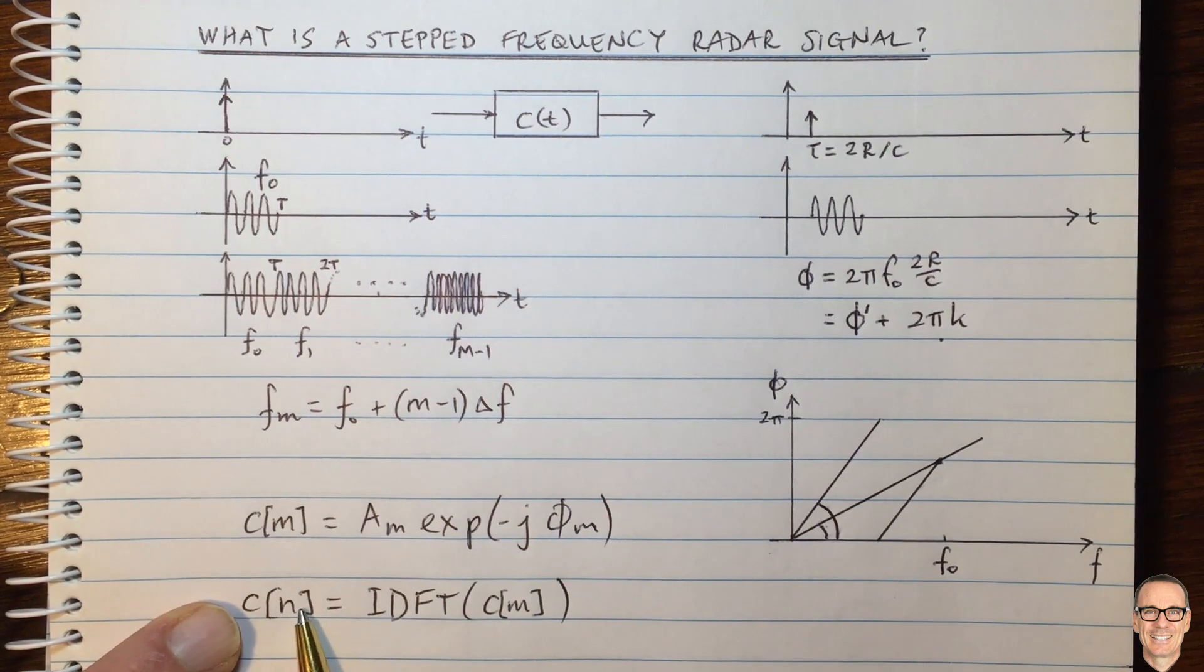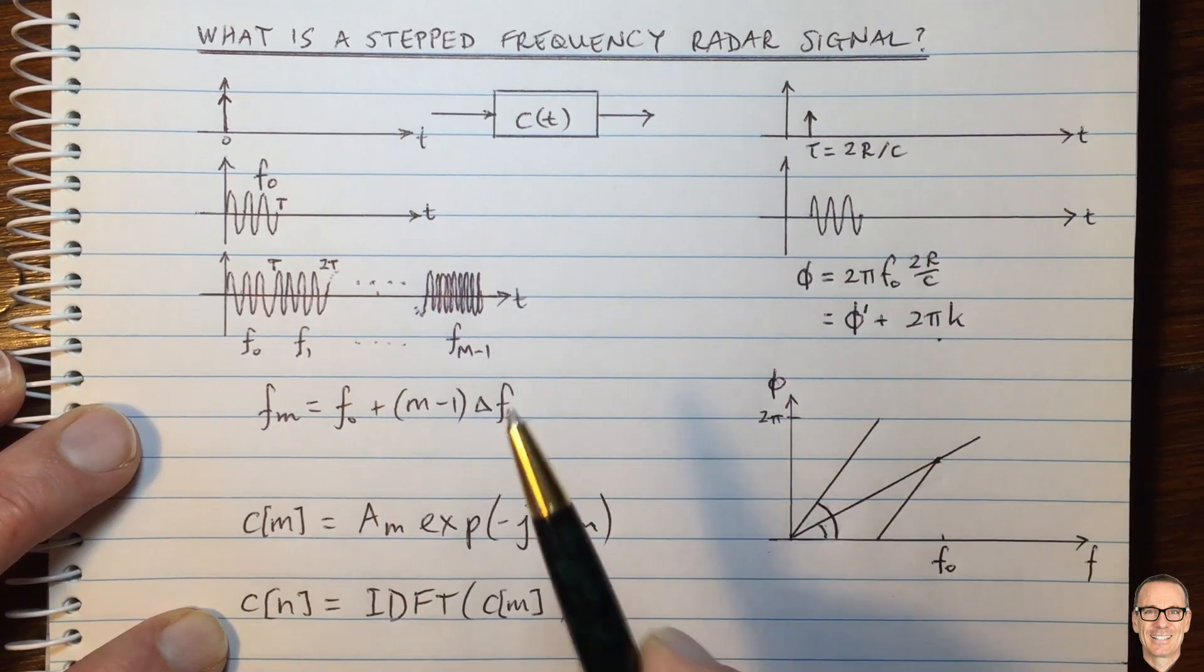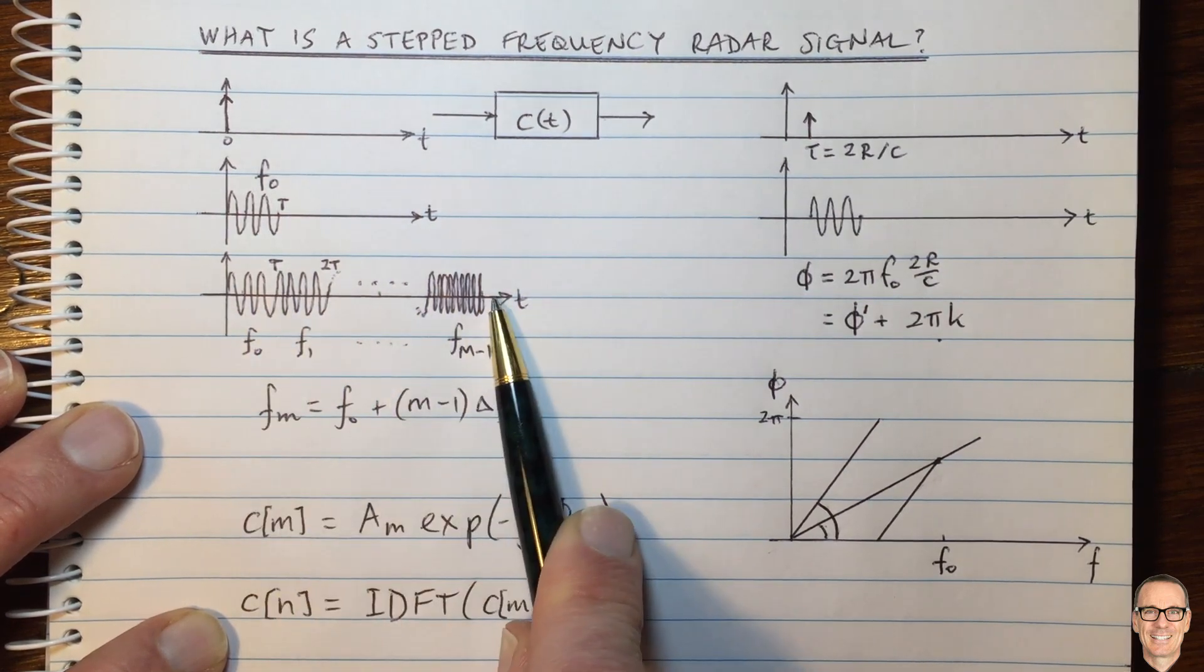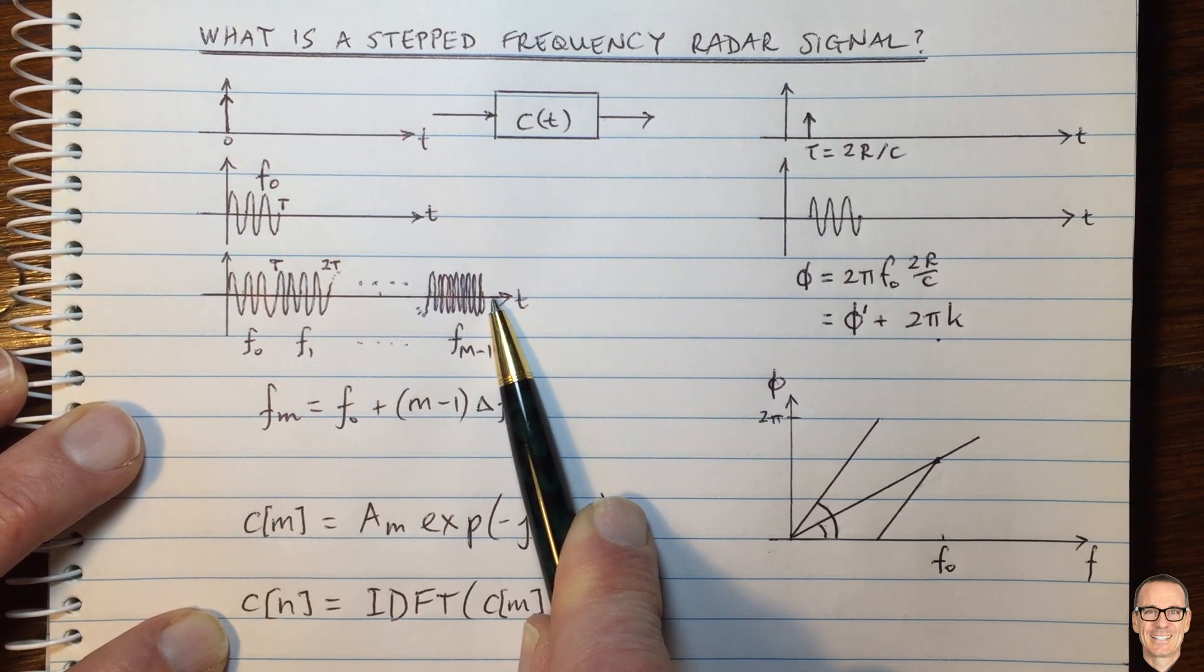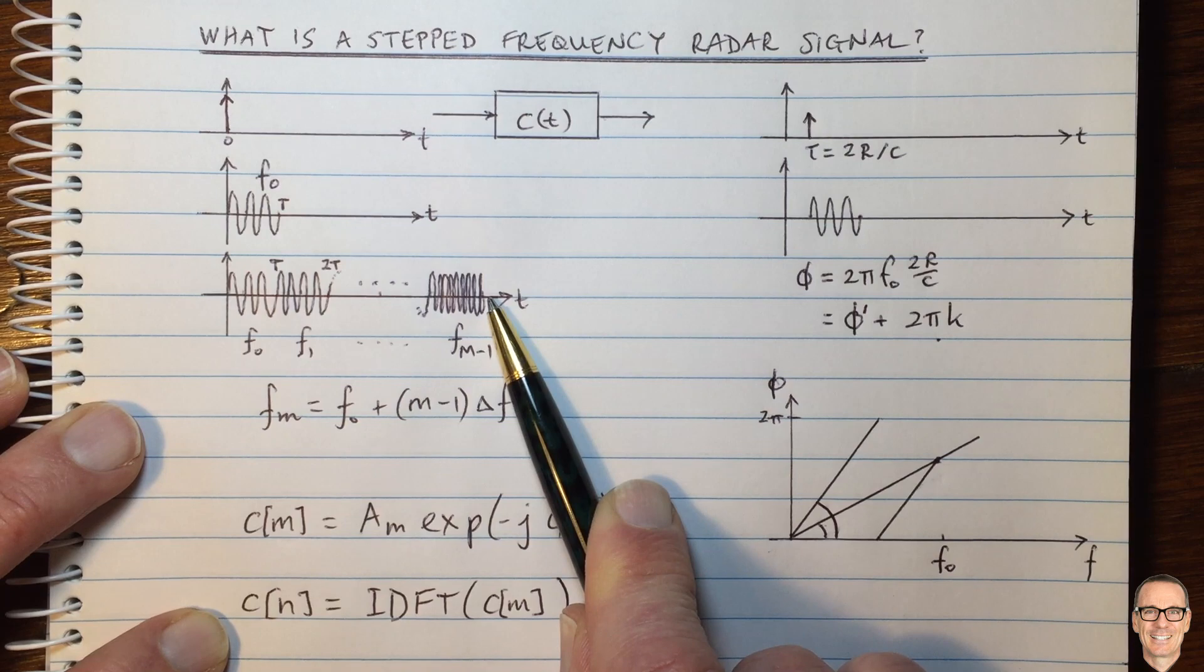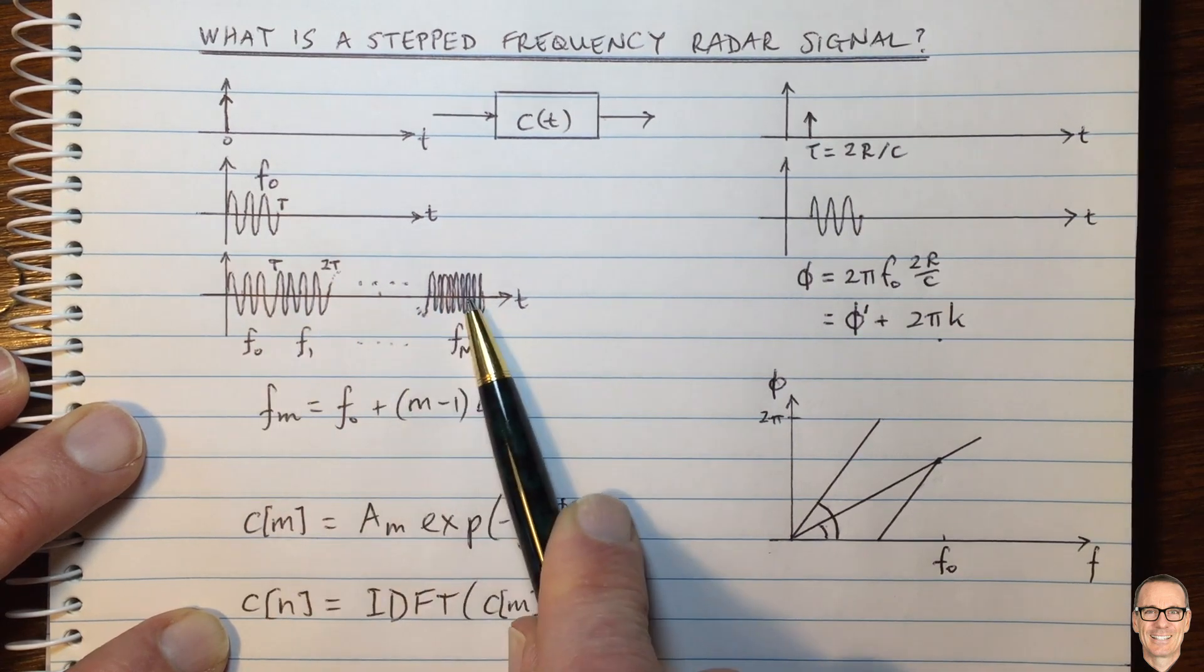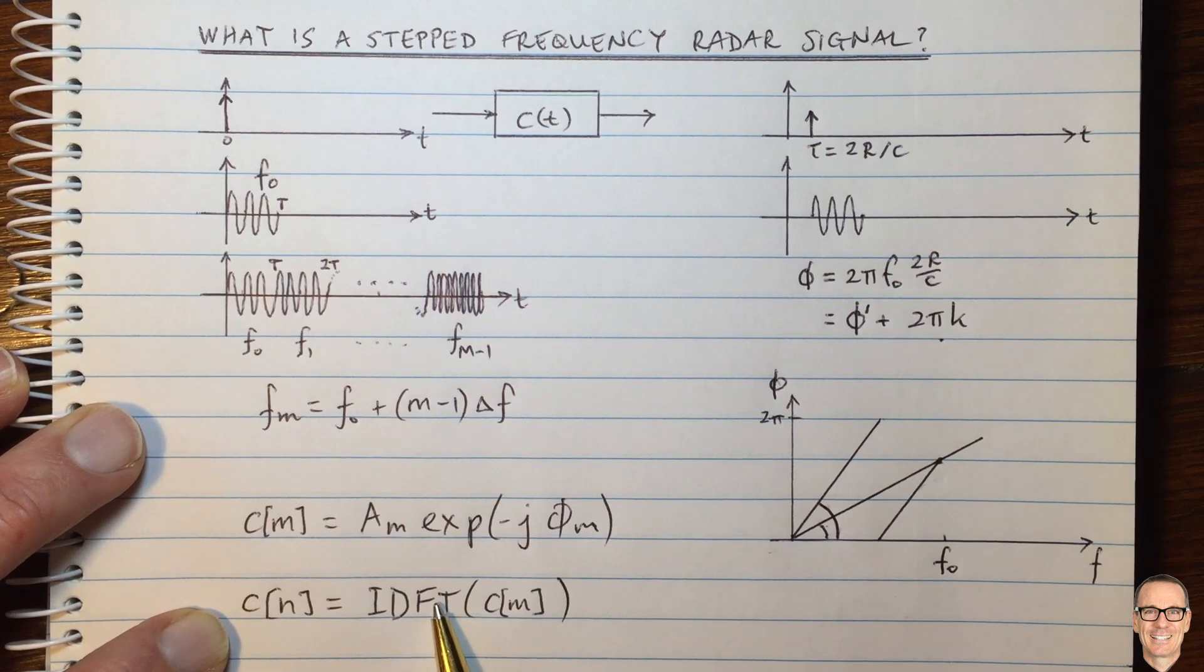So one of the disadvantages, of course, is that we're using a longer period of time, which means that this approach typically is not suitable for airborne radar systems. So typically use a different type of waveform for airborne radar. But for ground-based radar, such as ground penetration radar, radars where your target does not change very much, this is a very good approach and it's a very efficient implementation using an inverse fast Fourier transform.